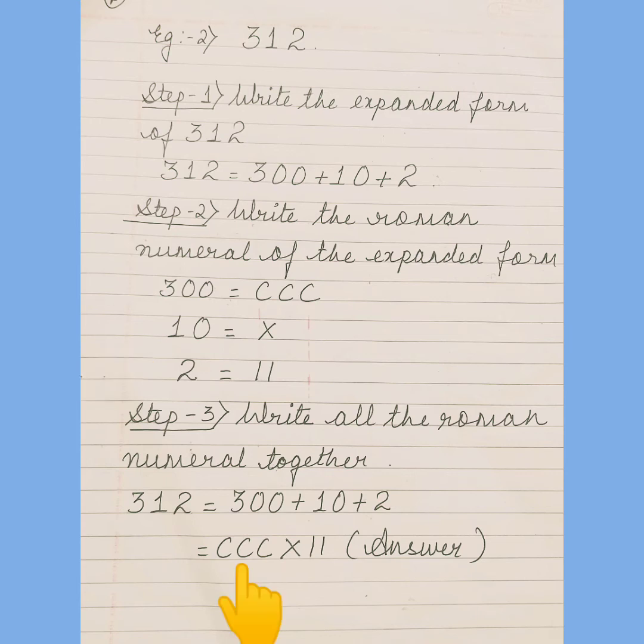Now combine all the Roman numerals together. That is equal to CCCXII. That is the Roman numeral form of 312.